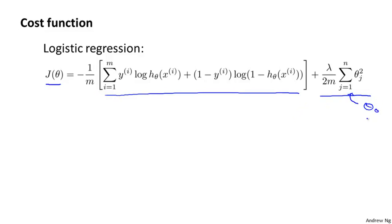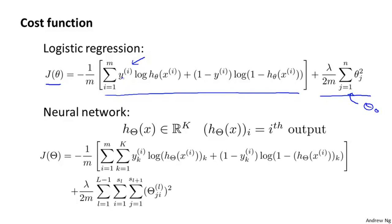For a neural network, our cost function is going to be a generalization of this, where instead of having basically just one logistic regression output unit, we may instead have k of them. So here's our cost function. Our neural network now outputs vectors in R^K, where k might be equal to 1 if we have a binary classification problem. I'm going to use this notation h(x) subscript i to denote the i-th output. That is, h(x) is a k-dimensional vector, and so this subscript i just selects out the i-th element of the vector that is output by my neural network.